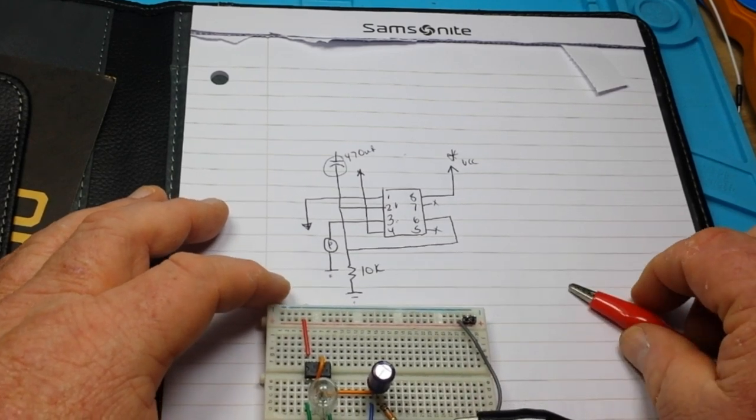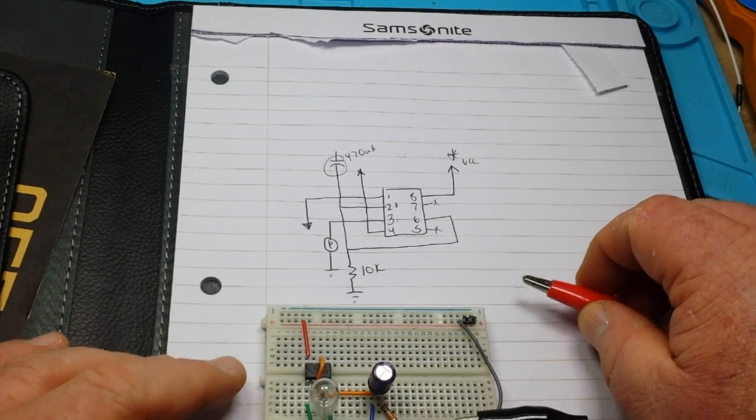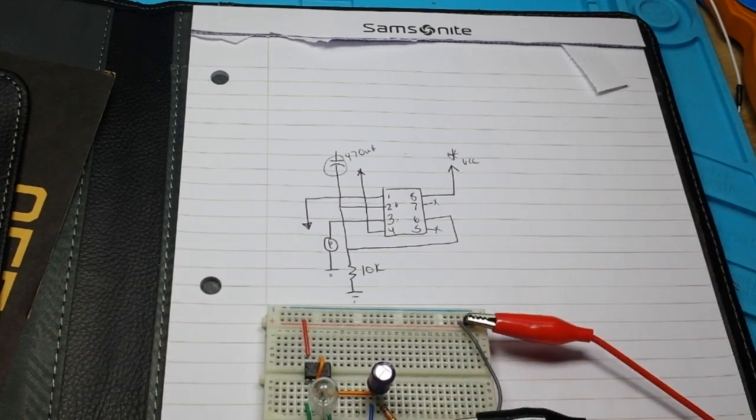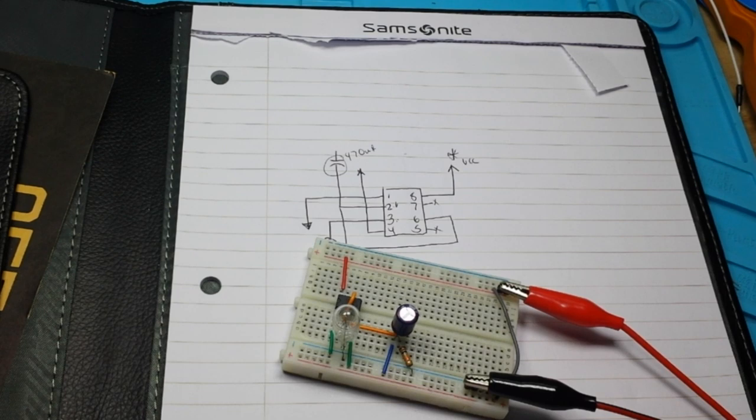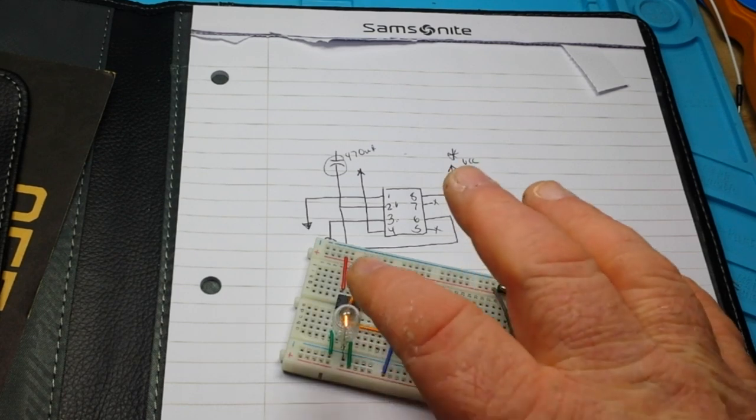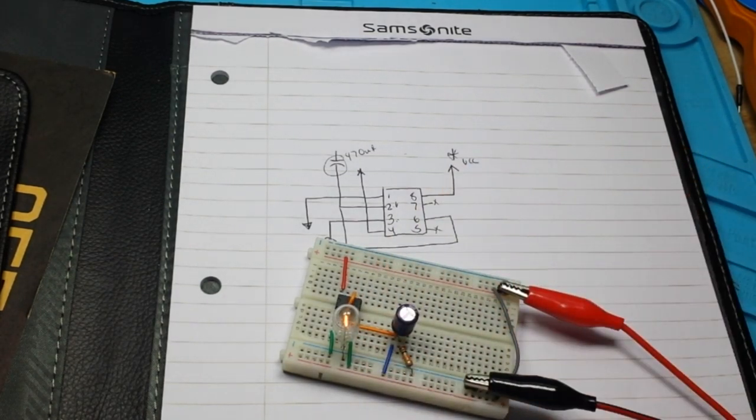So hook up power. In this case we're using 9 volts just to light this bulb up bright enough. We apply power. And in a few seconds, we have light.